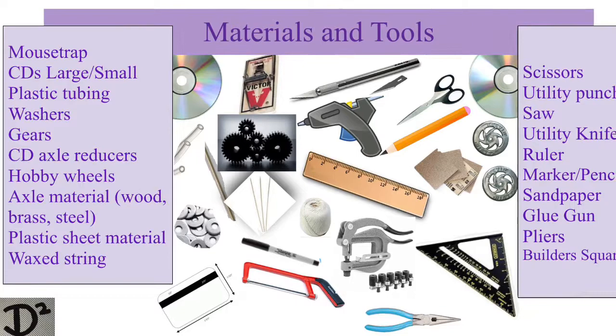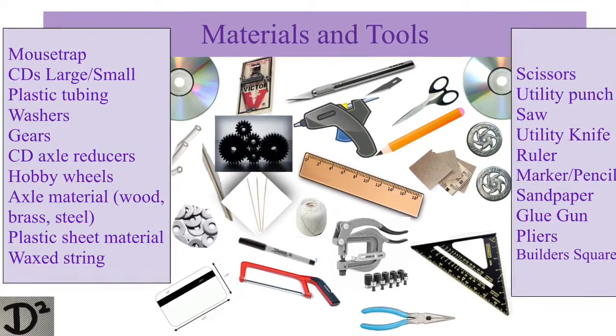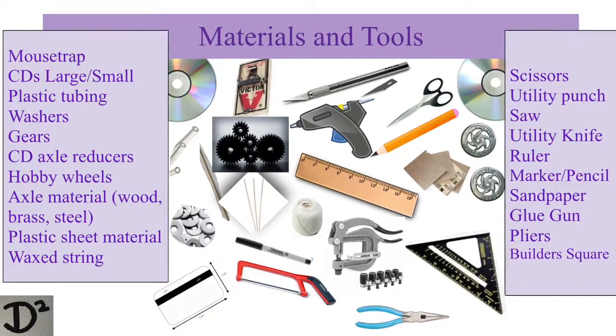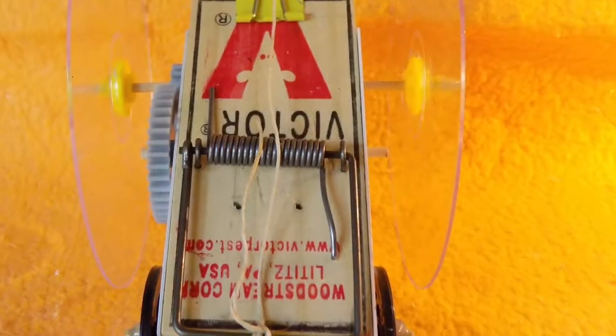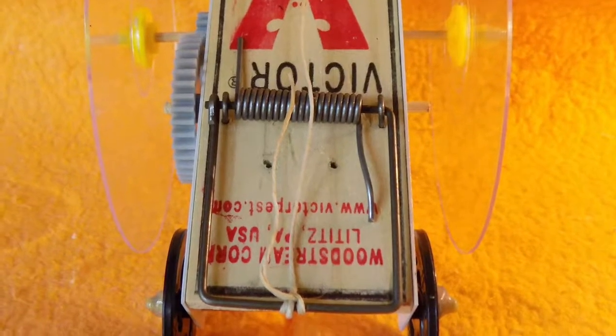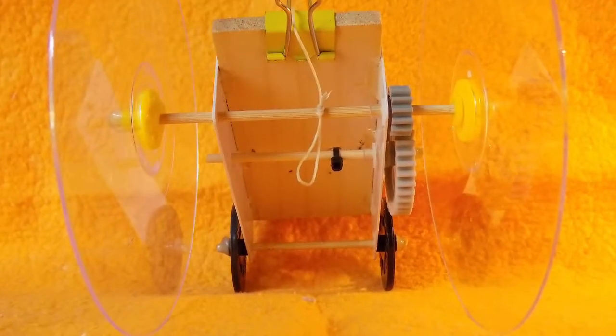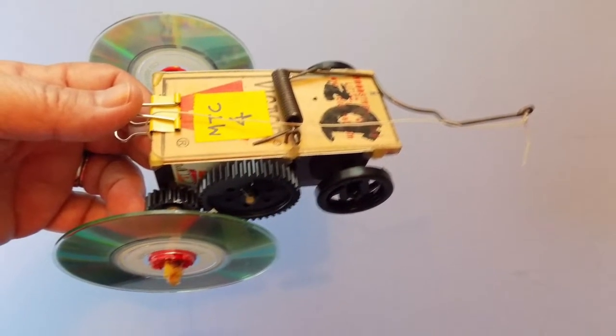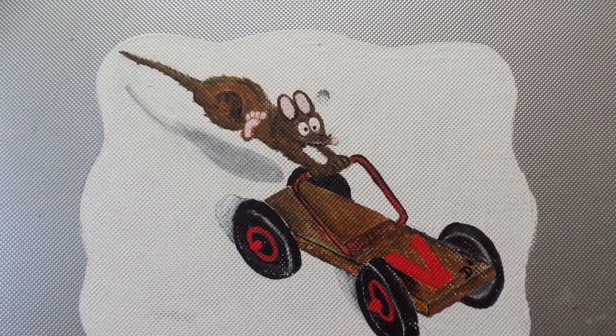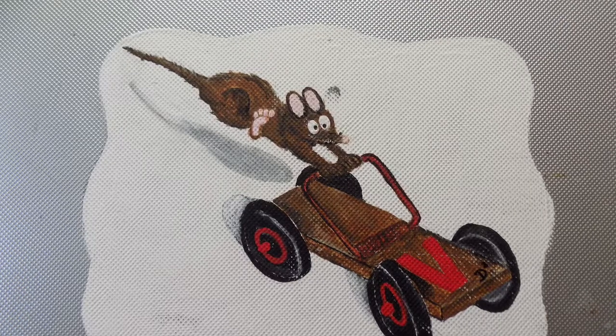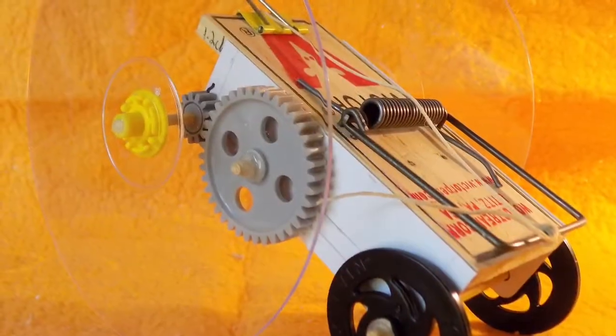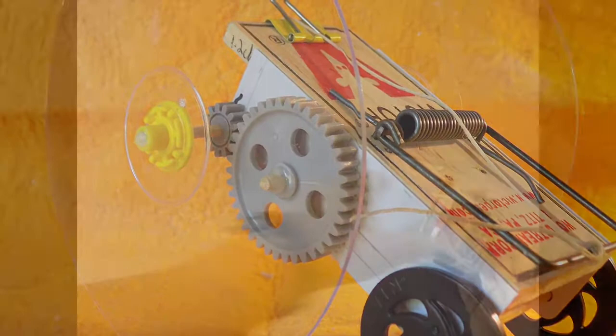A mousetrap car can be constructed using a few basic tools, some craft and hobby supplies that are easily located, and some readily found materials around the house. According to Wikipedia, a mousetrap car is a small vehicle whose only source of power is a mousetrap. It's often used in physical science classes to help students build problem-solving skills, and as part of STEM-based programs to help students develop their engineering skills and practices. The mousetrap car uses the stored potential energy in the compressed spring to turn the axle or wheels of the car, transforming the potential energy into kinetic energy — the energy of motion.